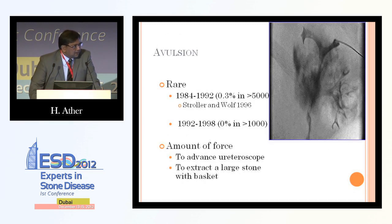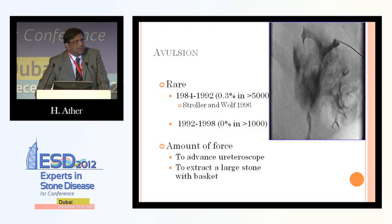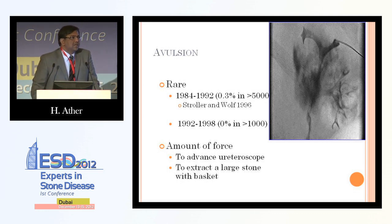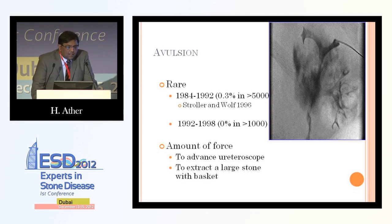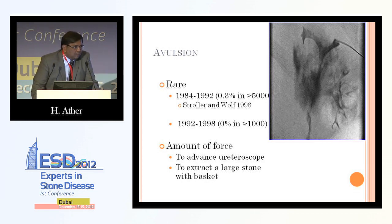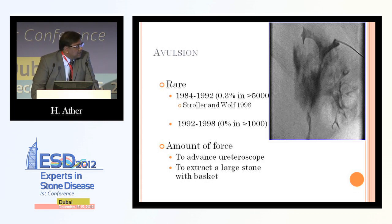Coming back to our list of major complications — the most devastating thing that can happen during ureteroscopy is a ureteral avulsion injury. Stoller and Wolf reviewed 5,000 cases of ureteroscopy, all of them semi-rigid or rigid, and the ureteral avulsion rate was 0.3%. A similar analysis on 1,000 patients between 1992 and 1998 showed no ureteral avulsion injuries.